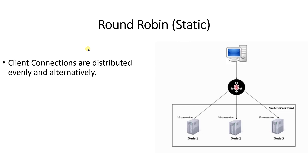As discussed earlier, round robin is a static load balancing method. It does not consider server device performance — whether the server device performance is low or not, it will evenly distribute the client connection requests. It does not support node or pool member assignment.